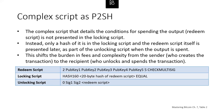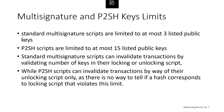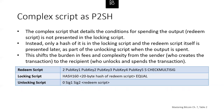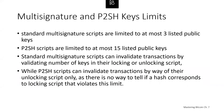With P2SH, the complex redeem script is not present in the locking script — it's moved to the unlocking script. All we have in the locking script is a hash of that redeem script. This shifts the burden of fees and complexity away from the sender to the recipient who unlocks and spends the transaction. Standard multi-signature scripts are limited to about three listed public keys, and P2SH scripts are limited to about 15 listed public keys, though that may change over time.